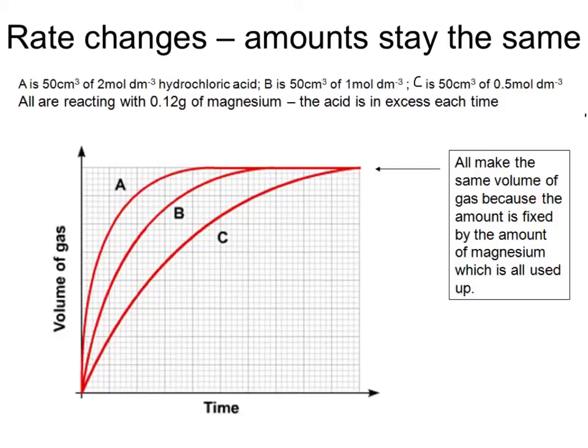This second situation is a little different because here we've got 50 cubic centimetres of three concentrations of acid, a concentration of 2, a concentration of 1, and a concentration of 0.5. But in this case, they're all reacting with the same mass of magnesium. And in this case, the acid is in excess, which means there's more than enough of it. And that means the 0.12 grams of magnesium is the limiting reactant. It's going to stop the reaction when all of the magnesium has been used up. And because there's a set amount of magnesium in every case, that means there's going to be a set amount of gas produced in every case. So here, all make the same volume of gas because the amount is fixed by the fixed amount of magnesium, which is used up. But the reaction rates differ because the concentration of the acids differ. The A is more concentrated, therefore has a steeper graph. So just recapping that the reaction finishes because one or other of the reactants has all been used up.